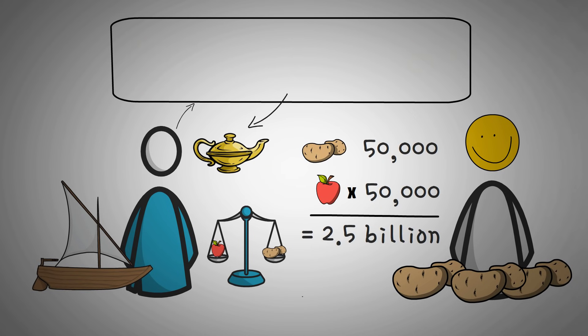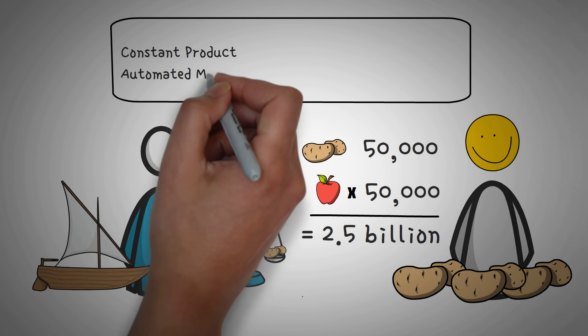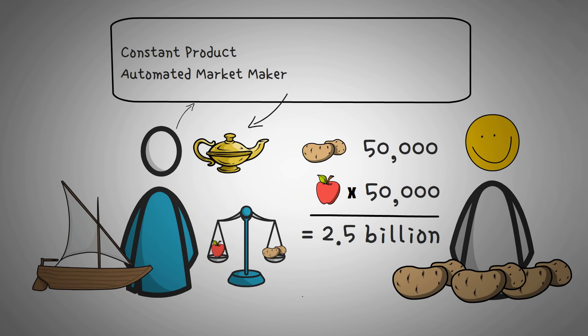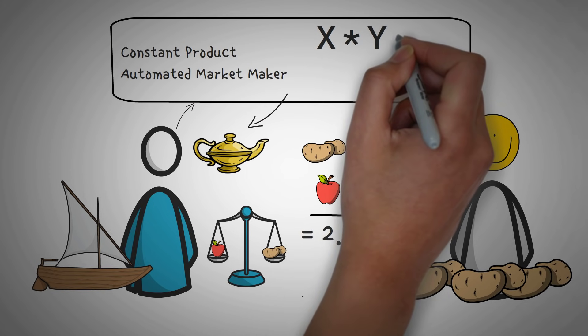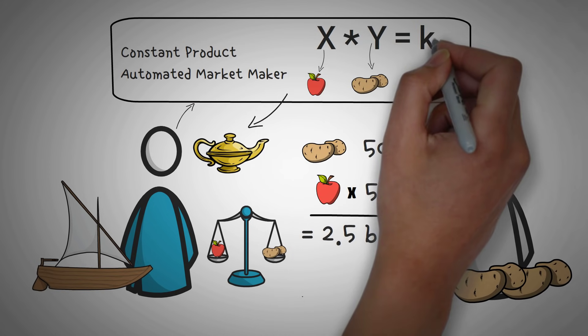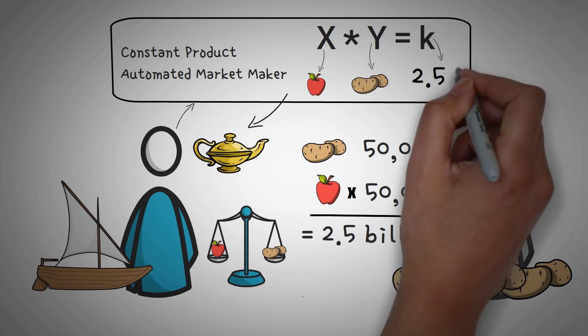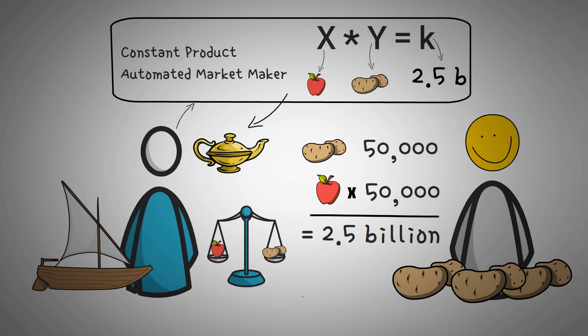it is actually the formula for a type of automated market maker called a constant product automated market maker. It uses the inverse formula, x times y equals k. Where x and y are the quantities or the amounts of the things that you have, where k is a constant that always stays the same and it does not change. In this case, k is 2.5 billion.